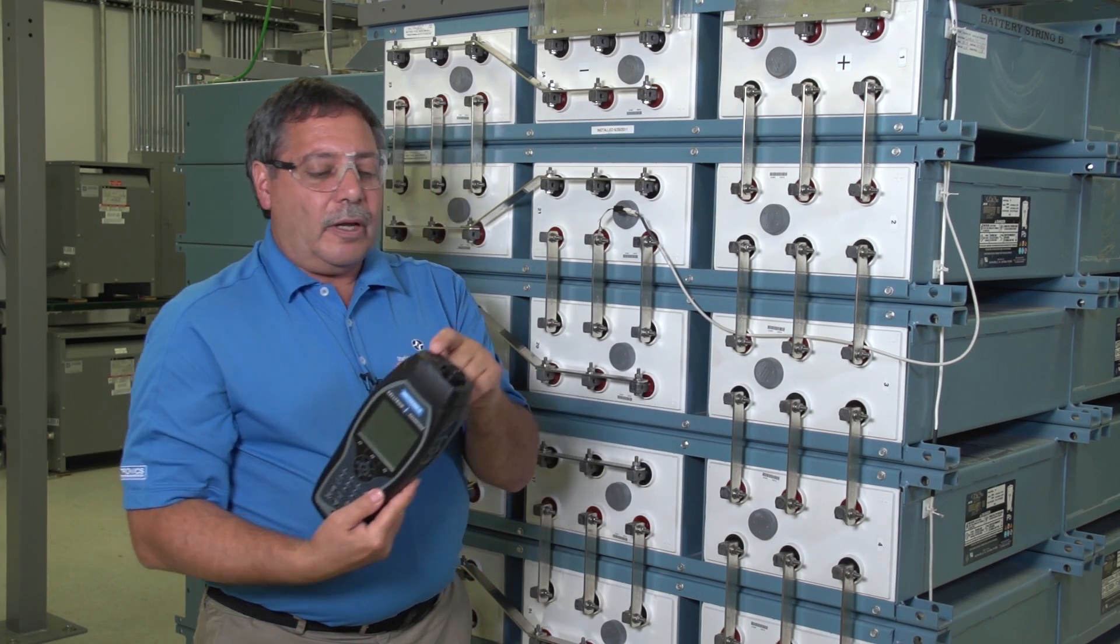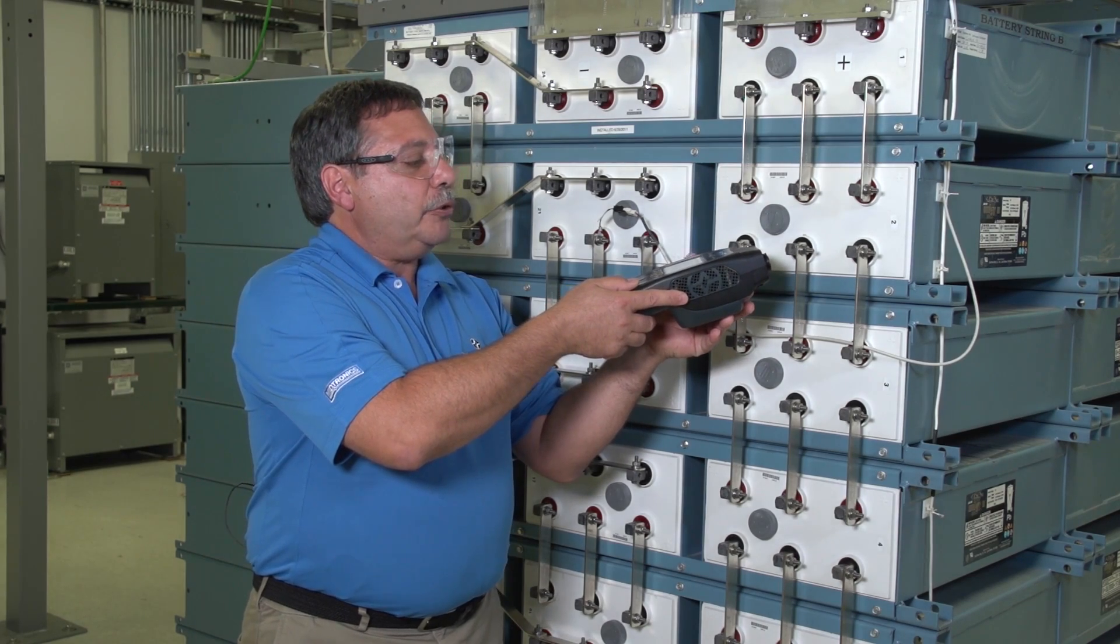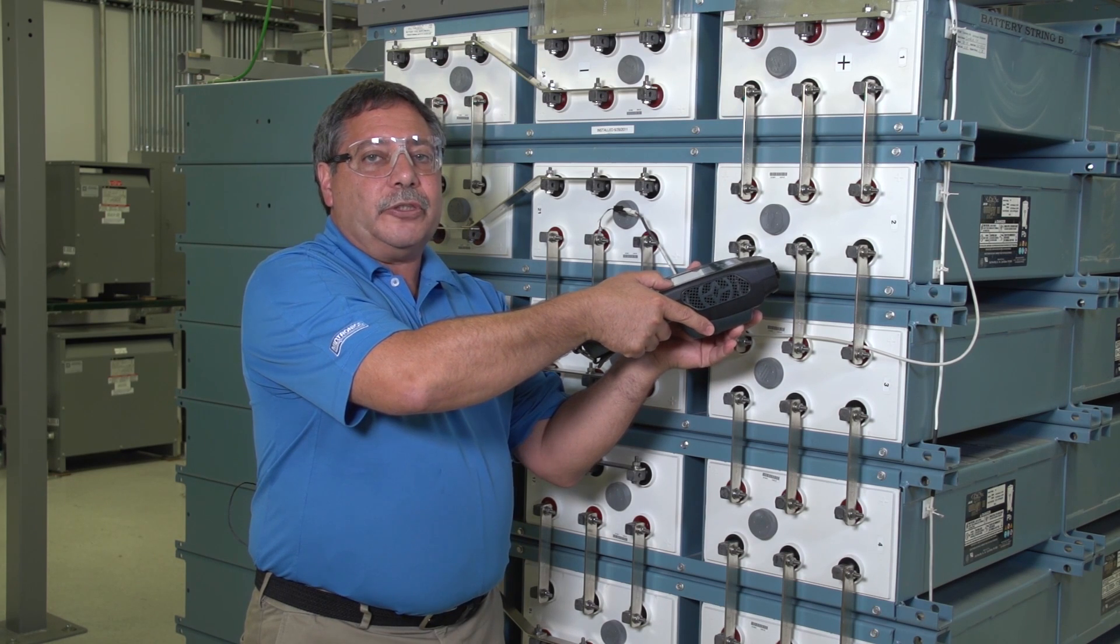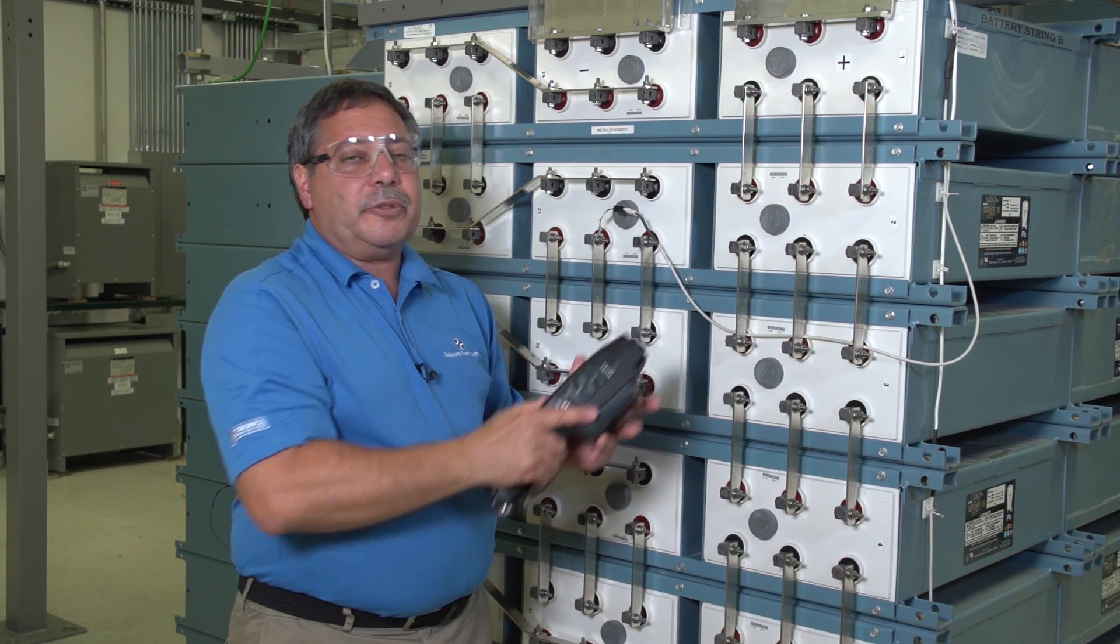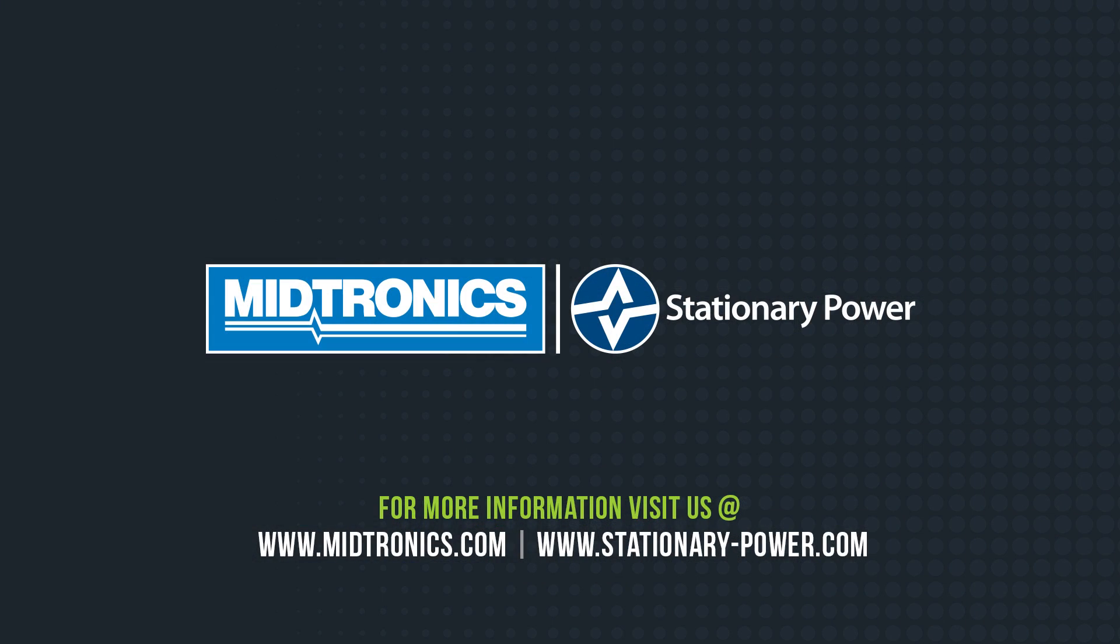So you're going to take your IR device, line it up to that negative post, and hit your F3 key when you're prompted to point and take the temperature reading. Then it'll capture that temperature reading for you, and you can go on and do your battery testing.